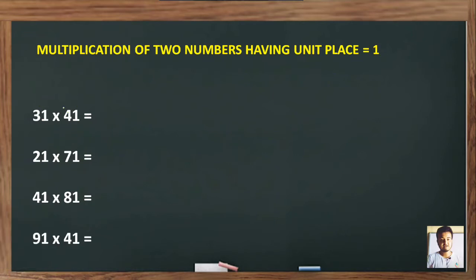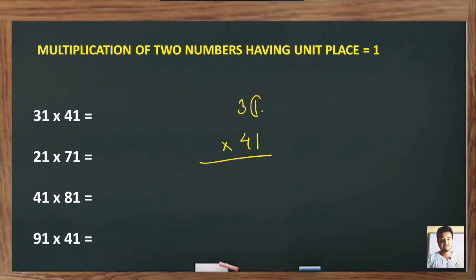First of all, let's take 31 into 41. To do this, first multiply 1 into 1, which is 1. Then add the tens digits: 3 and 4. Three plus four is 7. Then multiply these: 3 into 4 is 12. So this is your final answer: 1271.